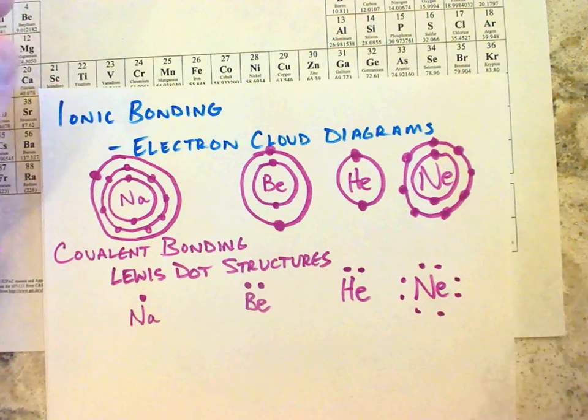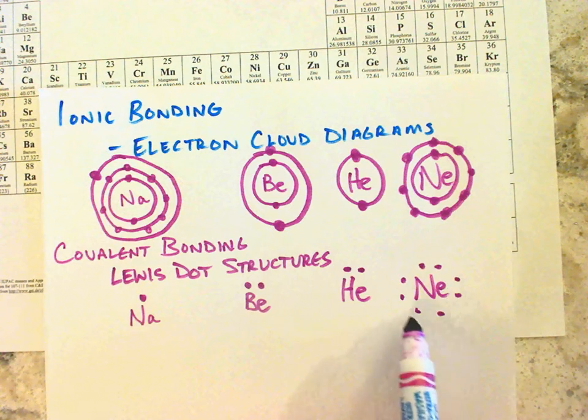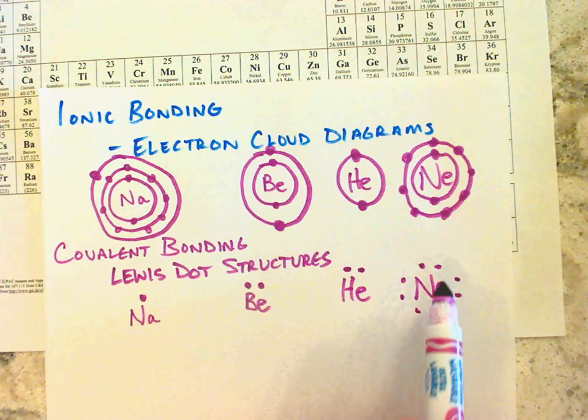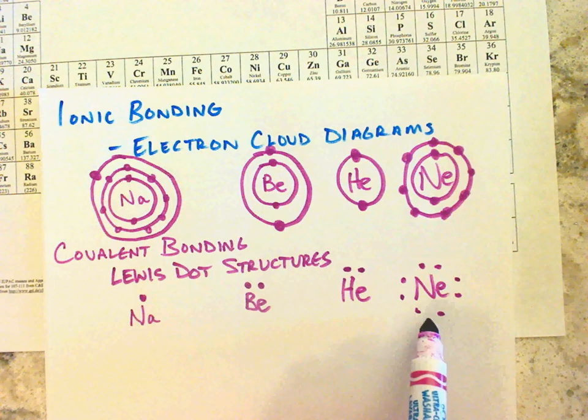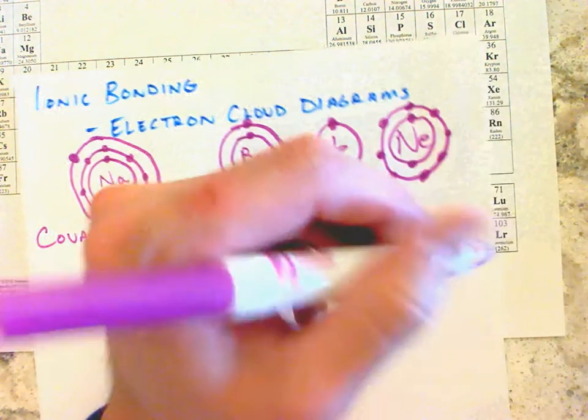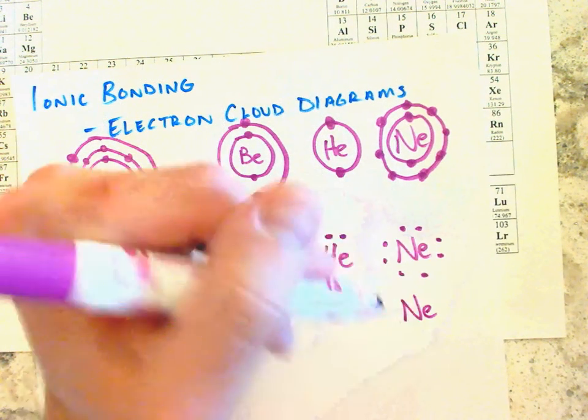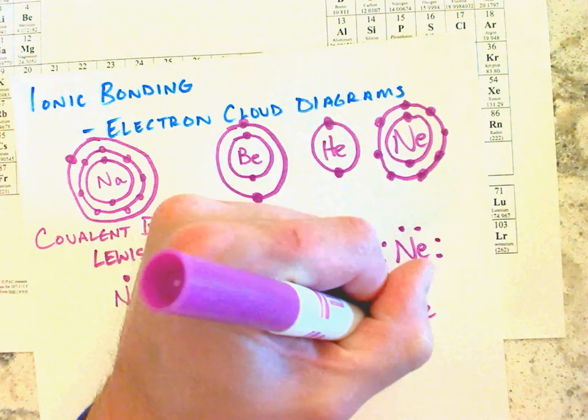Here's the periodic table that we labeled out last week. And we learned where these charges came from based on the position of the electrons. And so to talk covalent bonding, we can still use those electron cloud diagrams. And that's going to be the starting point for this week.